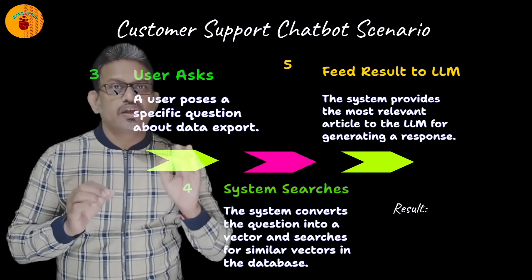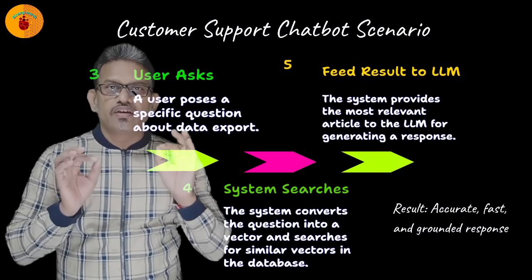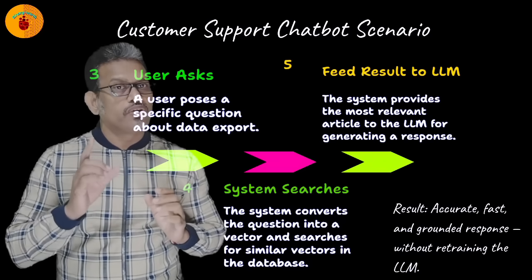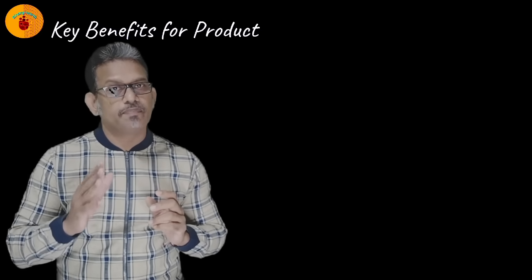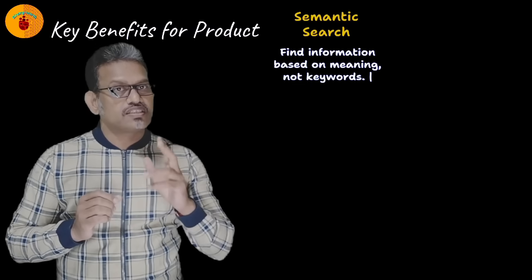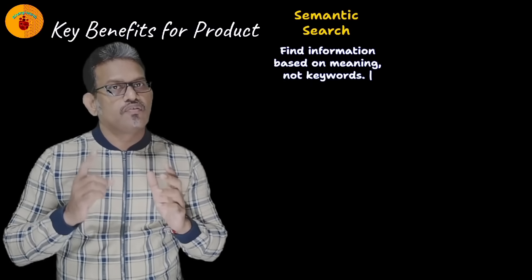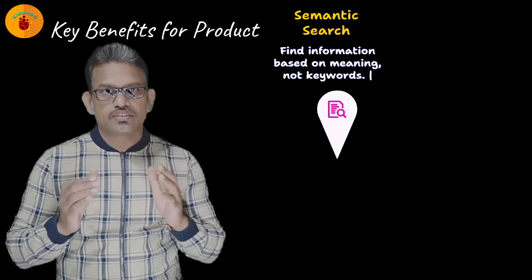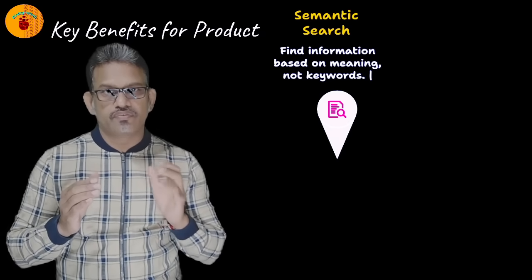The result is an accurate, fast, and grounded response without retraining the LLM. Vector databases provide key benefits for product teams. First: fast semantic search — find relevant information by meaning, not just by keywords.